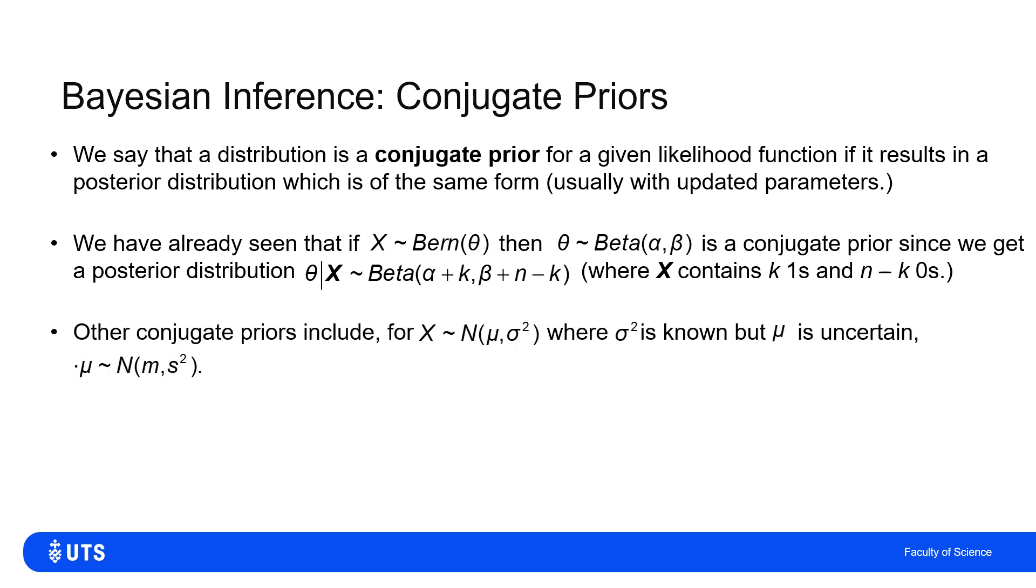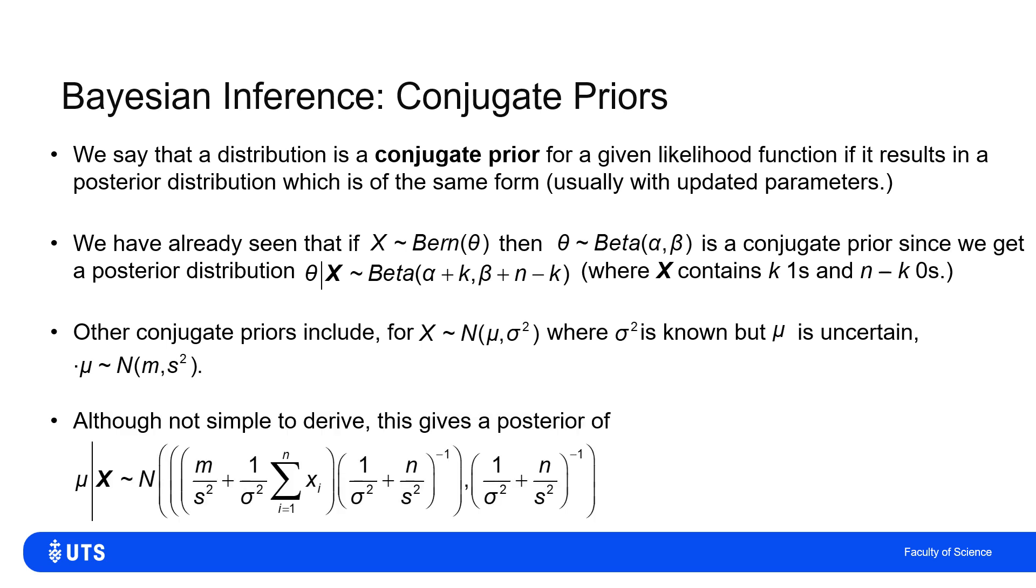There are many other examples, some easy to prove, some not. For example, if I've got a normal distribution—let's say I know the variance σ² but I don't know the mean μ—I describe that with another normal with mean m and variance s². I'll leave this as an exercise, but I can show that my posterior belief about μ will still be a normal, albeit with this pretty messy update to the parameters.